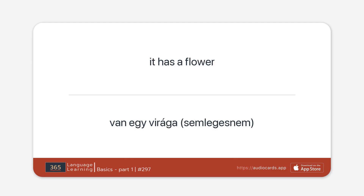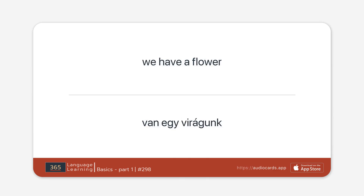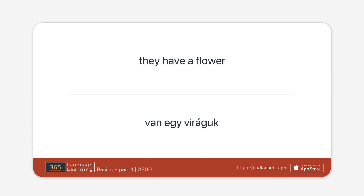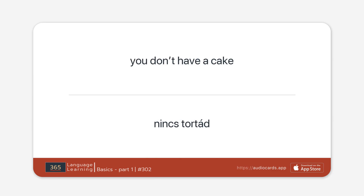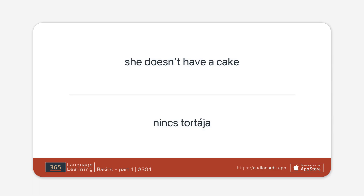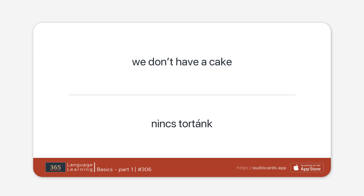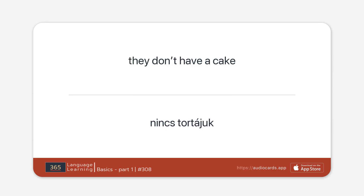It has a flower. We have a flower. You have a flower. They have a flower. I don't have a cake. You don't have a cake. He doesn't have a cake. She doesn't have a cake. It doesn't have a cake. We don't have a cake. You don't have a cake. They don't have a cake.